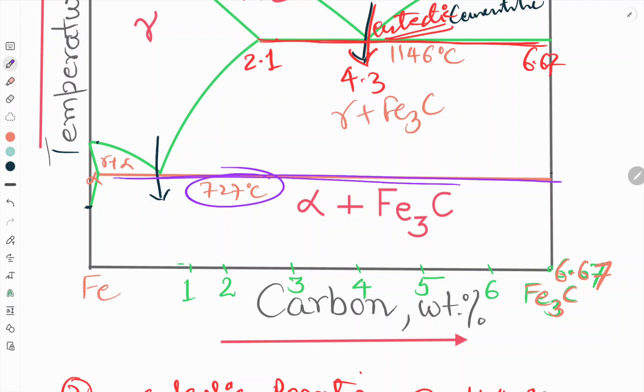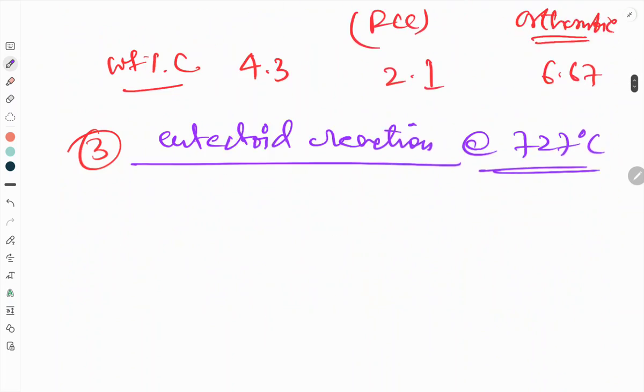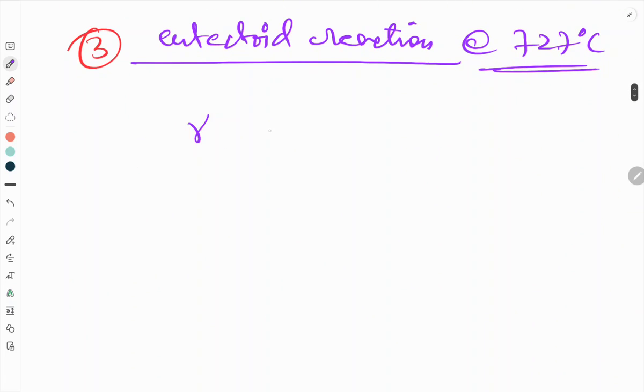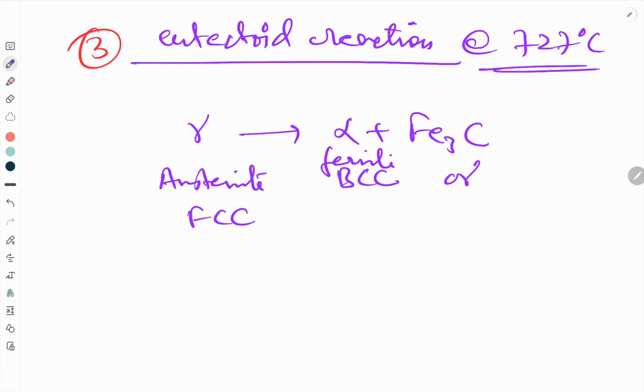So this line is eutectoid line and this temperature is 727 degree temperature. And this reaction happens here, that is called eutectoid reaction where gamma transforms to alpha plus Fe₃C. So austenite has FCC structure, alpha has BCC, this is ferrite, and this is orthorhombic, so this is called cementite as we have seen above.